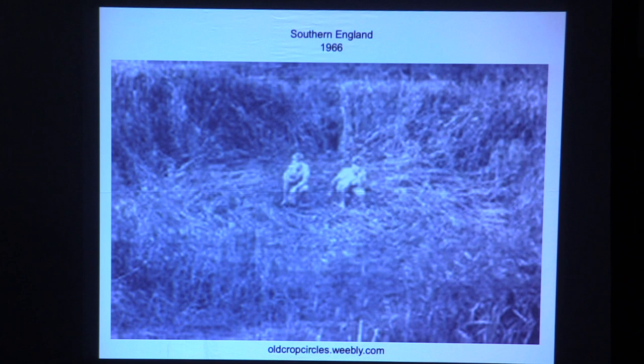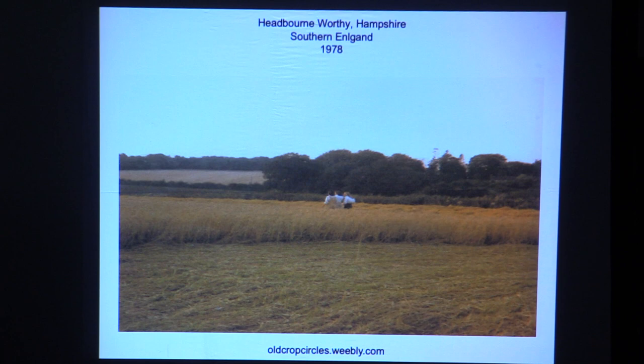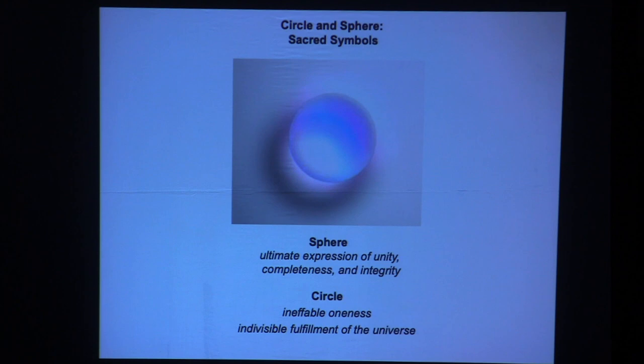Another photo from 1966 shows a couple of boys in one of these formations. Then 1978 — imagine rolling a die and getting five. There were five large circles in exactly that pattern, and the farmer's wife and two daughters are leaving after having visited this formation.